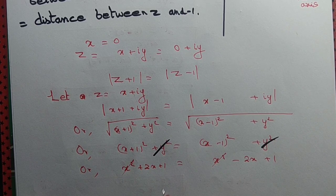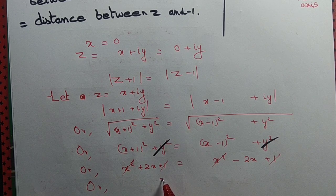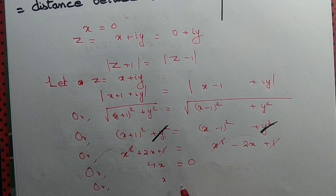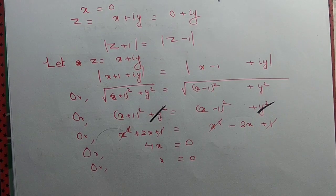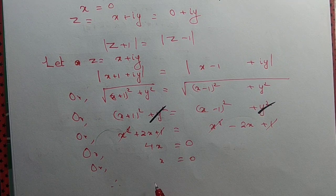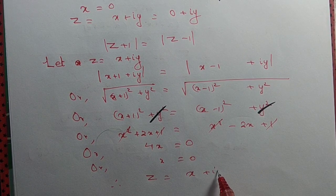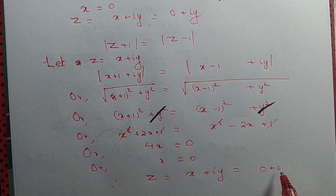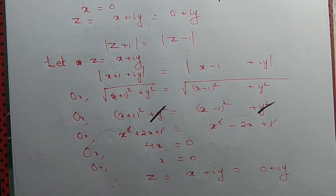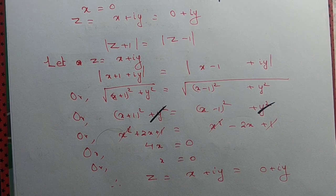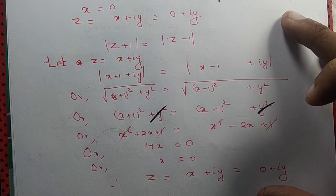We cancel y squared from both sides. Expanding gives x squared plus 2x plus 1 equal to x squared minus 2x plus 1. Cancelling x squared and 1 from both sides leaves 4x equal to 0, so x equal to 0. Therefore z equals x plus iy equals 0 plus iy, which satisfies the given equation.